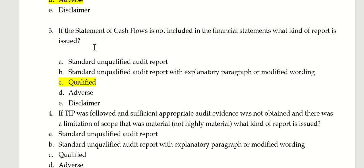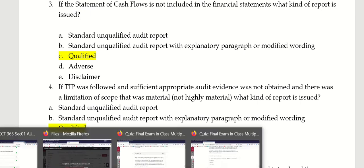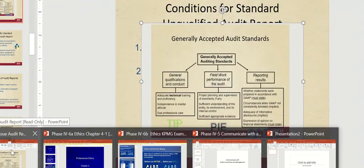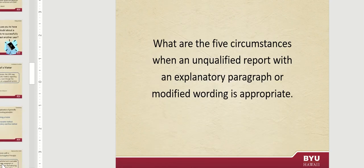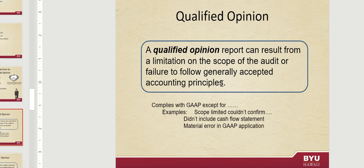If TIP was followed — training, independence, due professional care — and sufficient appropriate audit evidence was not obtained, there was a limitation of scope that was material but not highly material. A highly material limitation of scope would give you a disclaimer of an opinion, but a material — just material — would give you a qualified opinion. Qualified opinions can happen when there's a scope limitation or when they aren't following GAAP, if there's a material departure from generally accepted accounting principles. So when they aren't following GAAP or when you have a limitation of scope that's not highly material but it's material, that's when you'd give a qualified opinion.